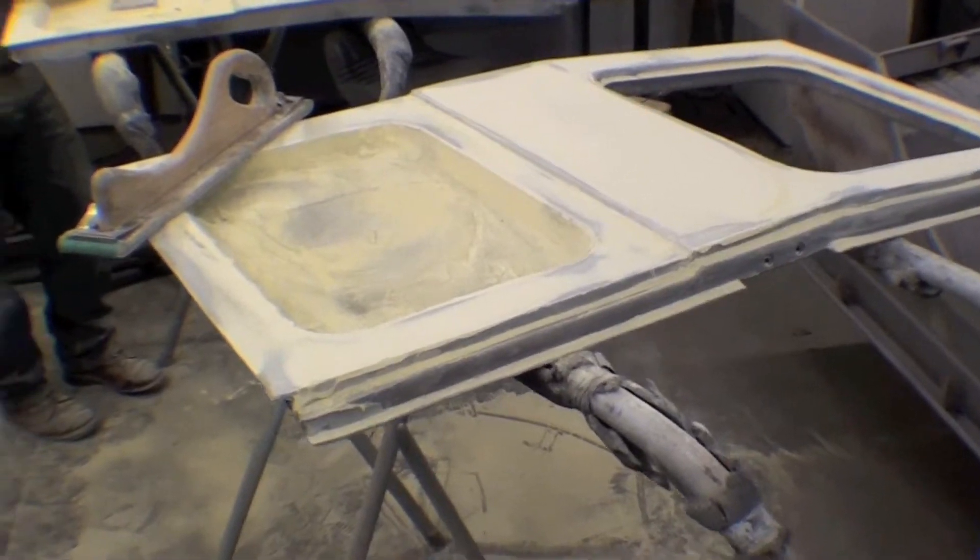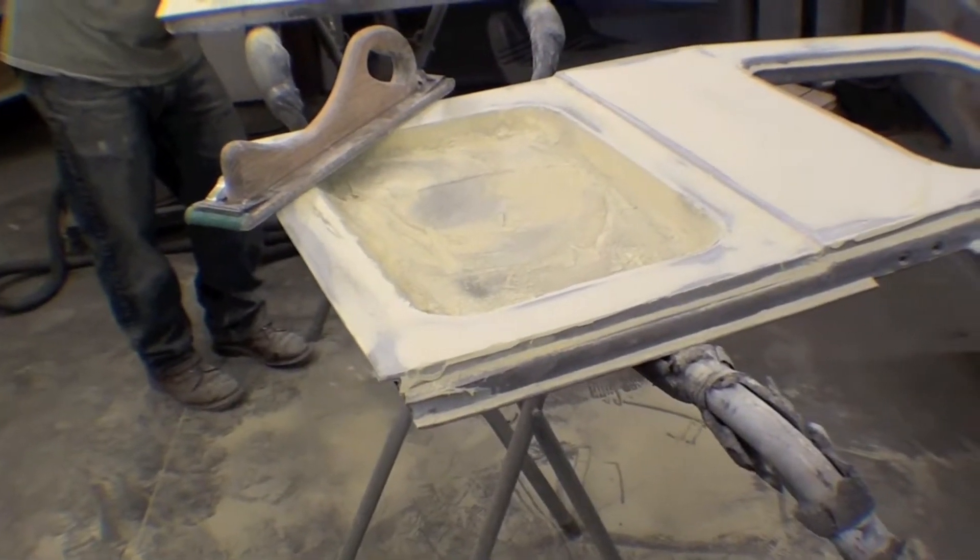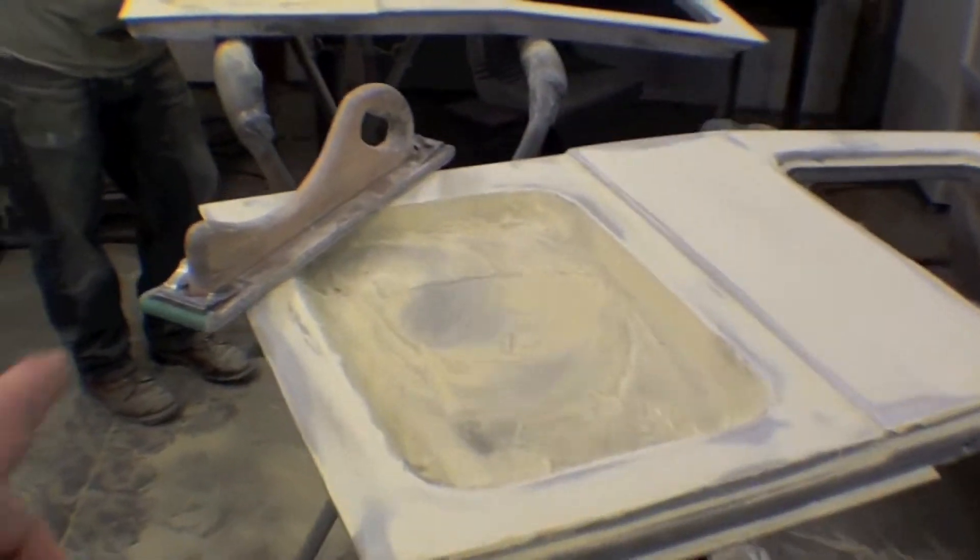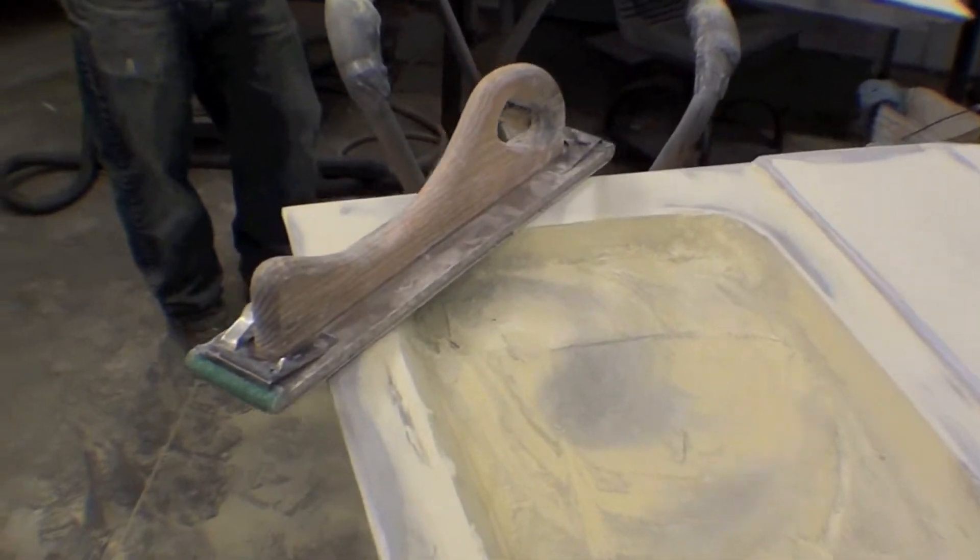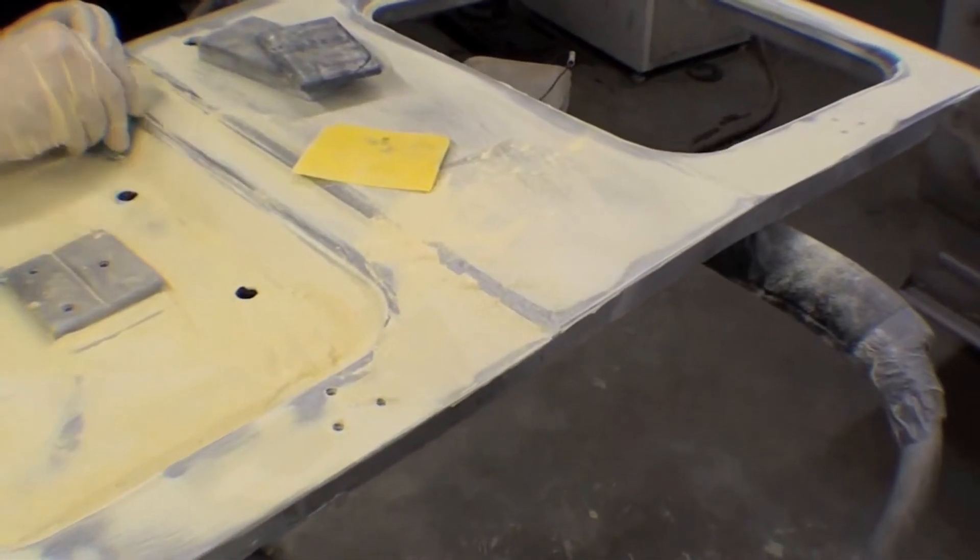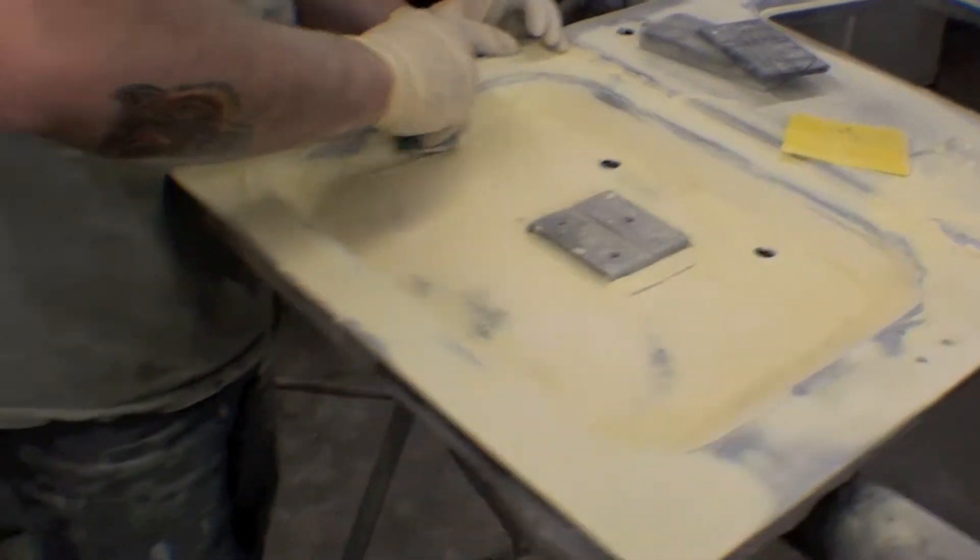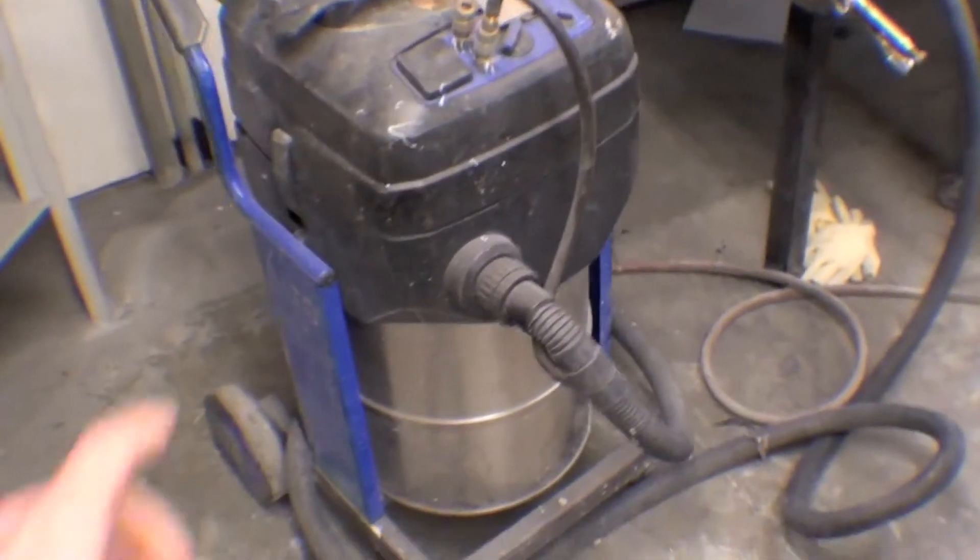He's using all different sorts of sanding techniques - paper, tools, using this hand sander here as well, sanding by hand, and also cutting it down with the vac.